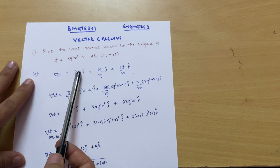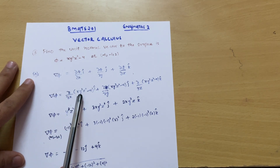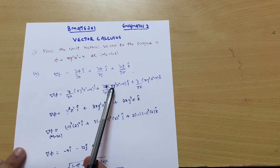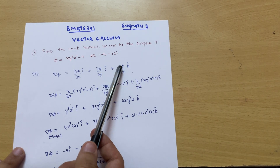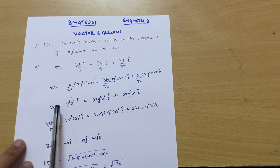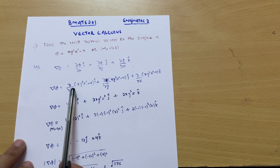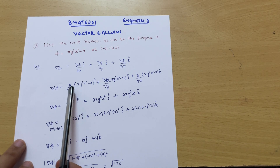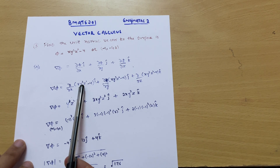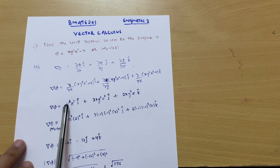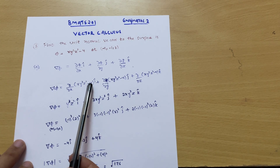Del phi equals: (∂/∂x) of (x y³ z² − 4) i-cap, plus (∂/∂y) of (x y³ z² − 4) j-cap, plus (∂/∂z) of (x y³ z² − 4) k-cap. For the x-component, we differentiate x with respect to x, which gives 1; y and z remain constant. So we get y³ z² times 1, and the constant −4 differentiates to 0, giving y³ z² i-cap.